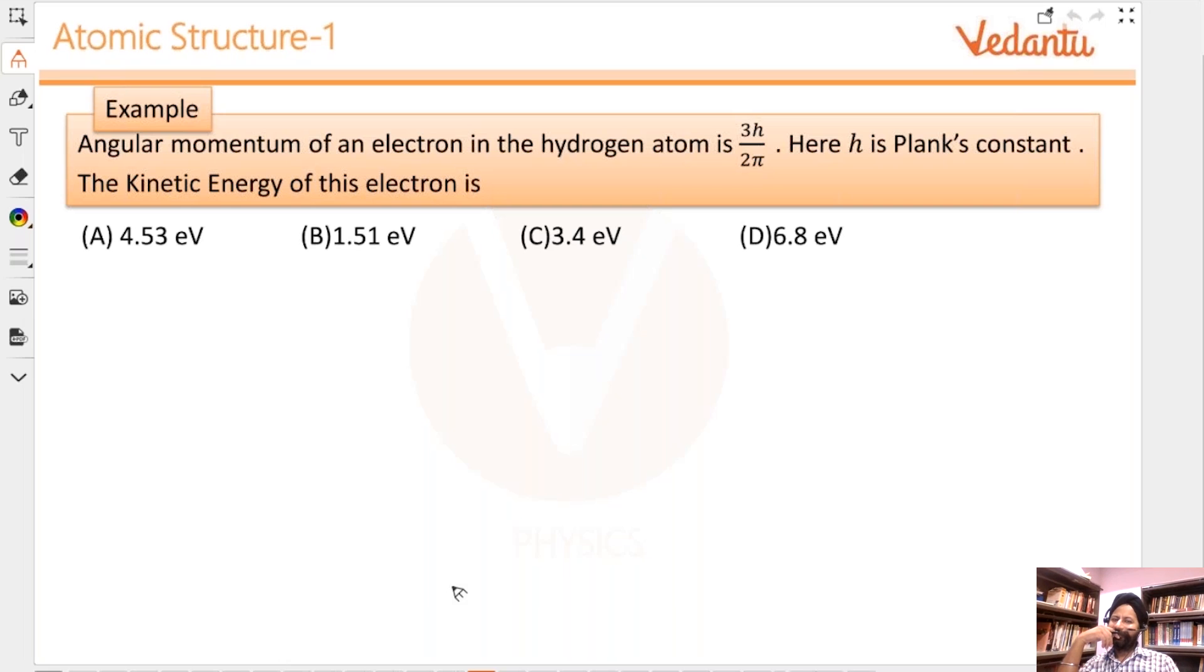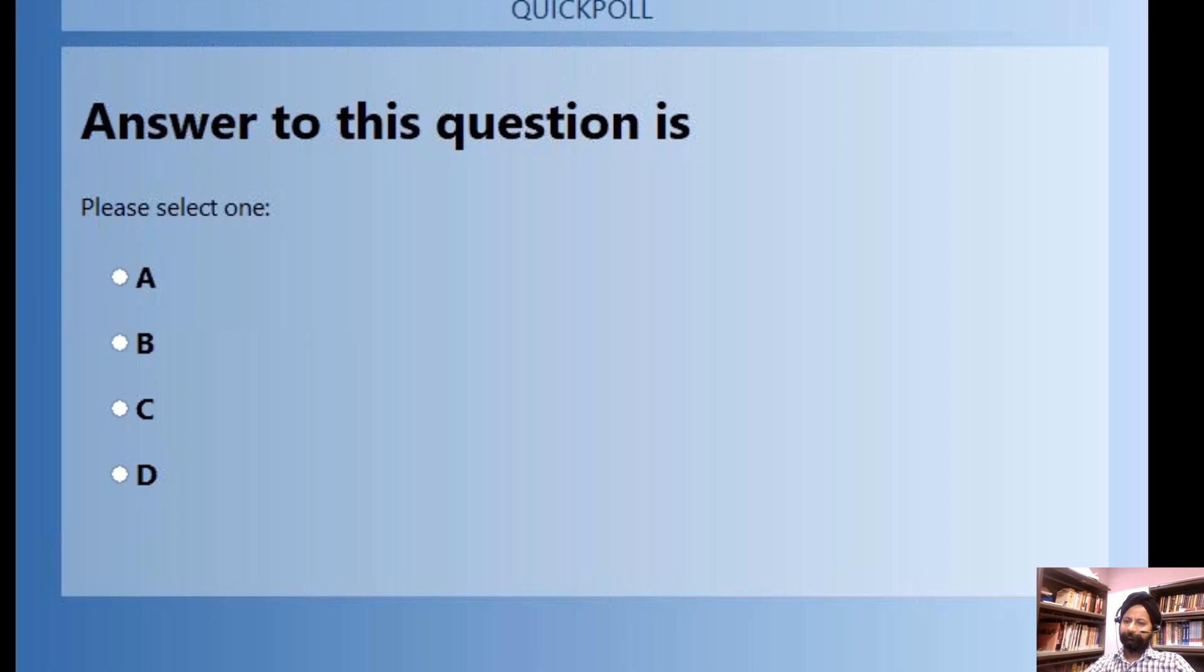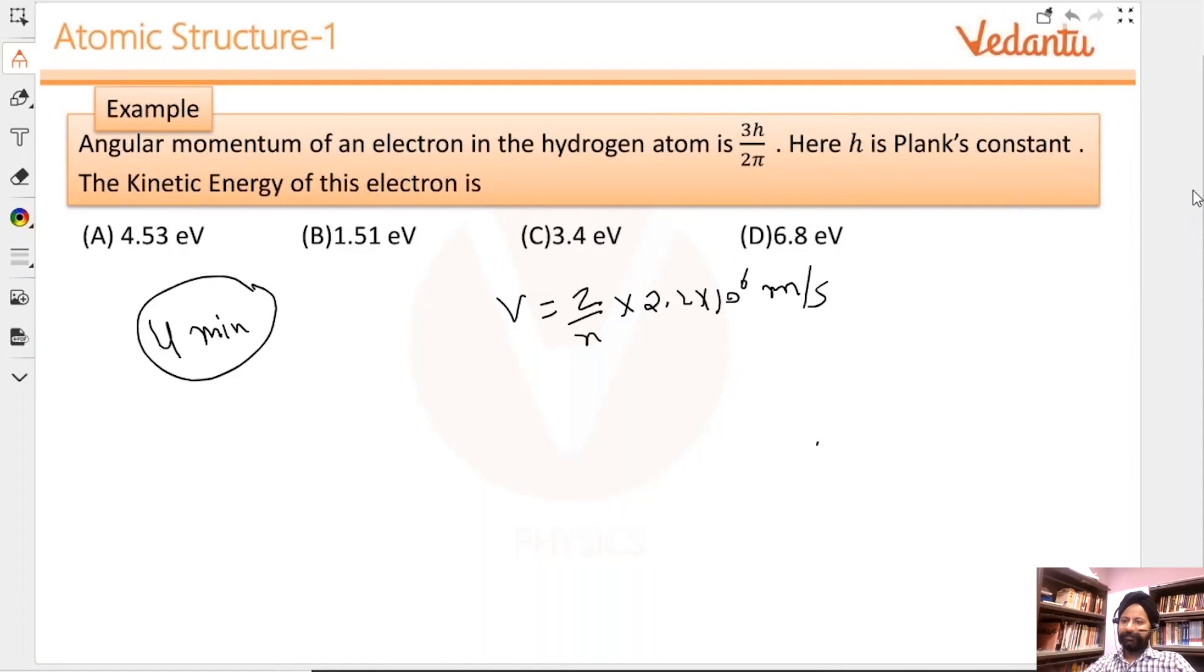This is not a difficult question, this is actually an easy question. I'm giving everybody four minutes on this. I want 100% right answer, please. A humble request - you have to work on this seriously. If you want, I will repeat: v equals z/n times 2.2 × 10⁶, already in SI units, so no conversions needed.